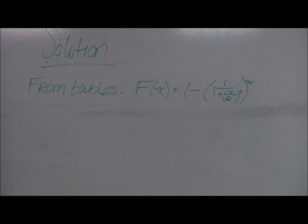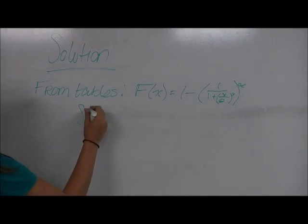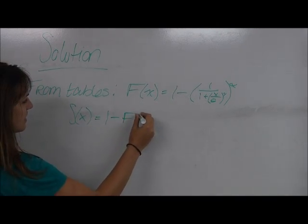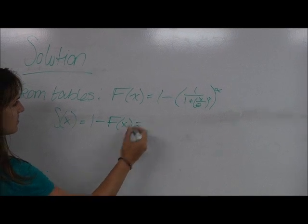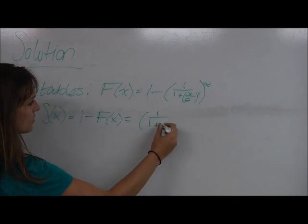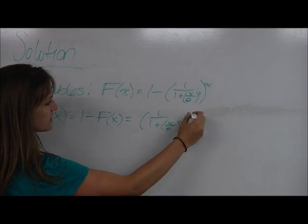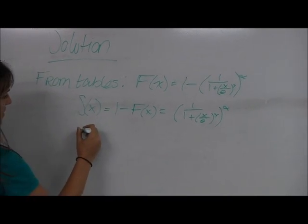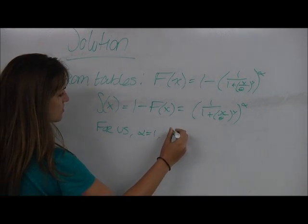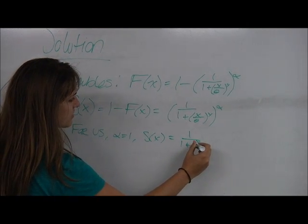We remember that our givens are framed in terms of the survival function. So now we need to consider what S of x is. So we subtract the CDF from 1 to get that our survival function for the Burr distribution is 1 over 1 plus x over theta to the gamma, raised to the alpha. And then for us, alpha is equal to 1, so S of x is just 1 over 1 plus x over theta to the gamma.